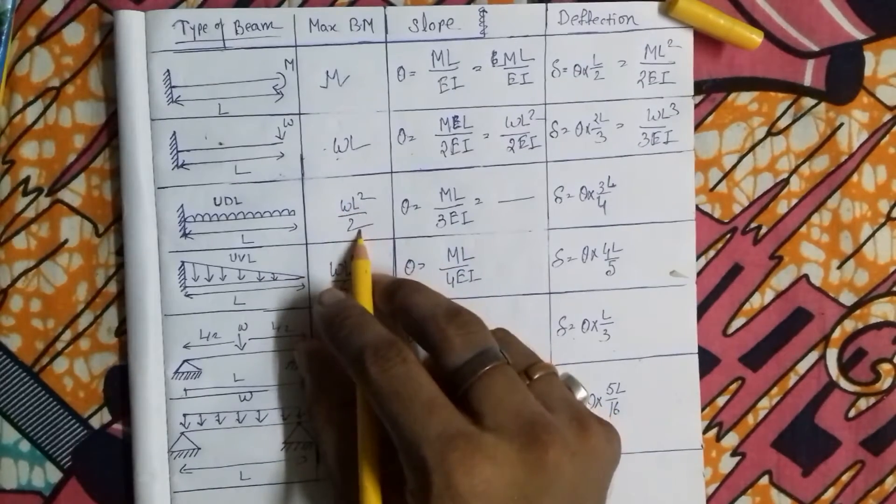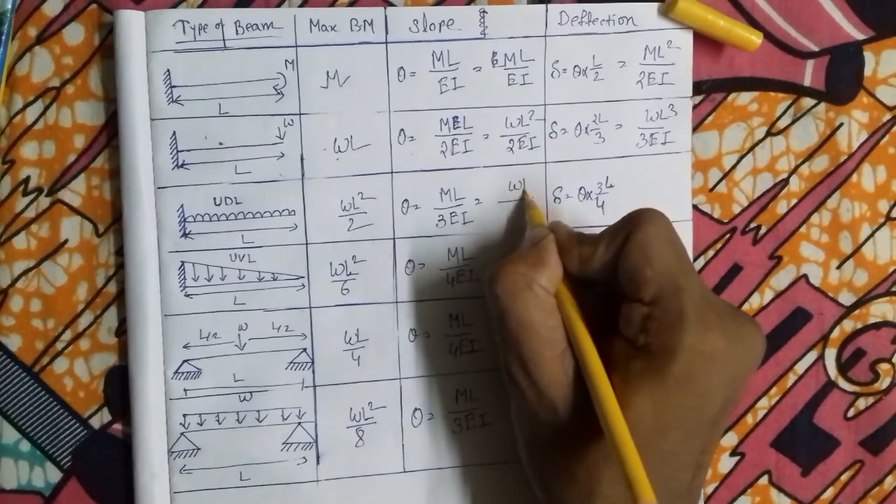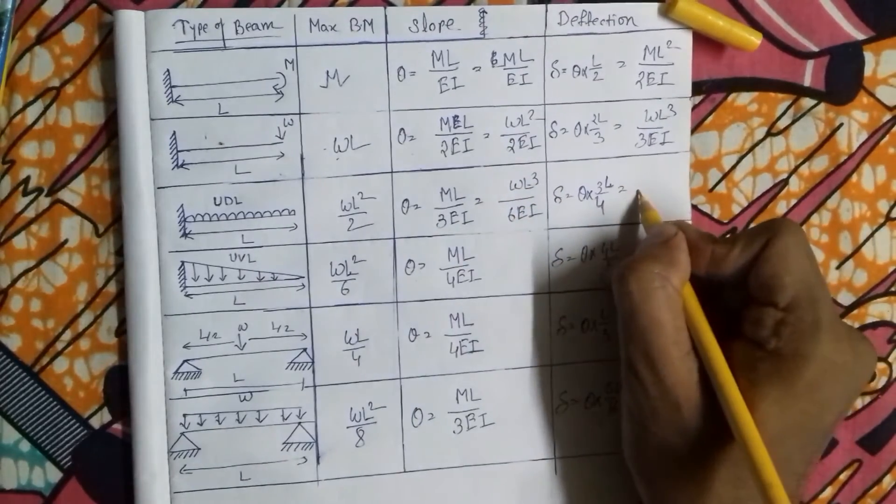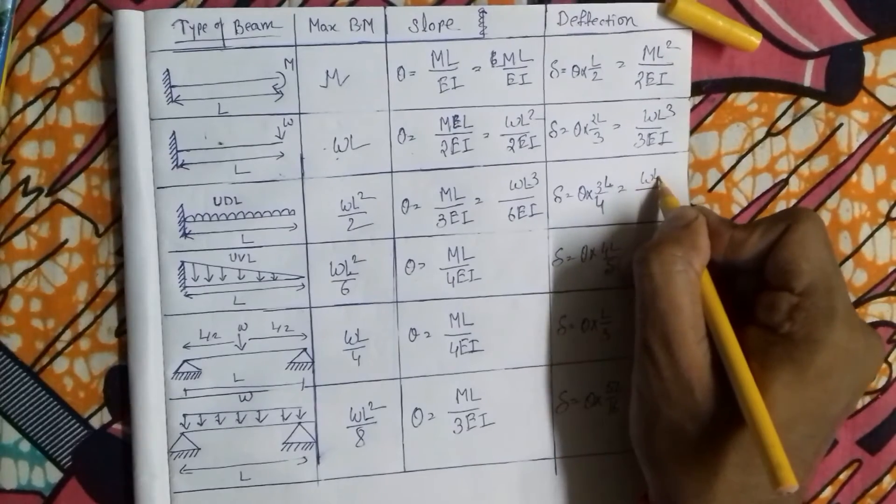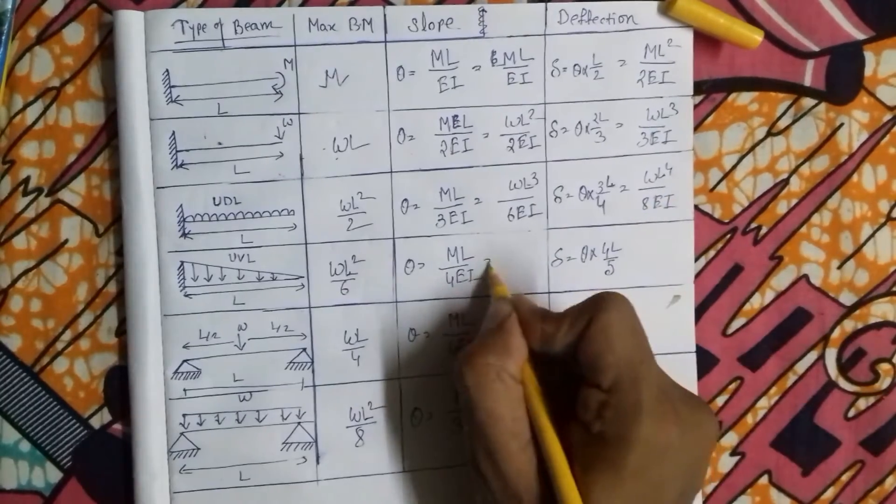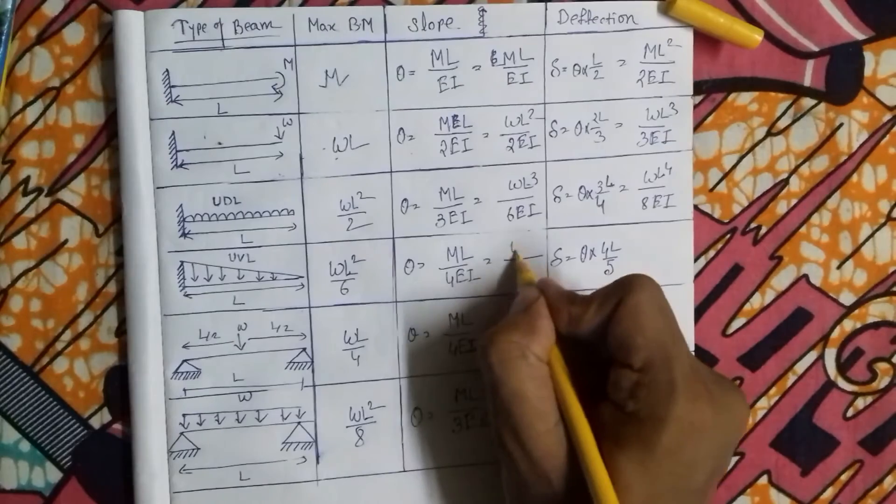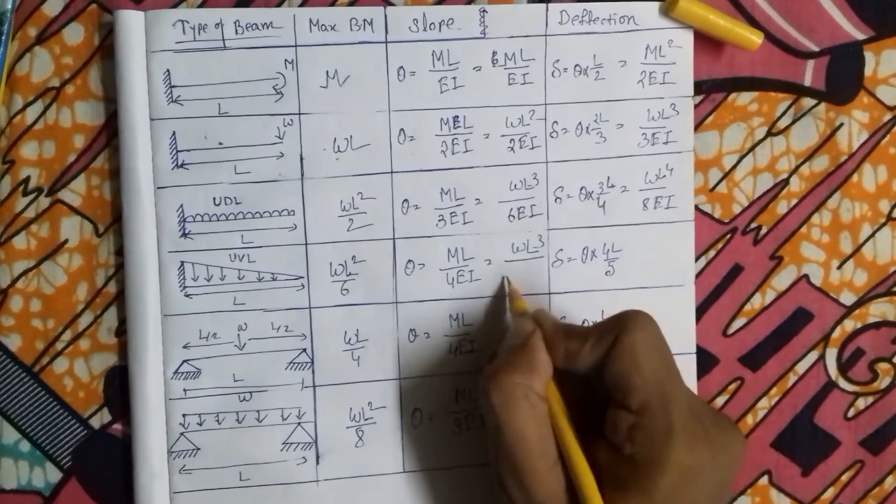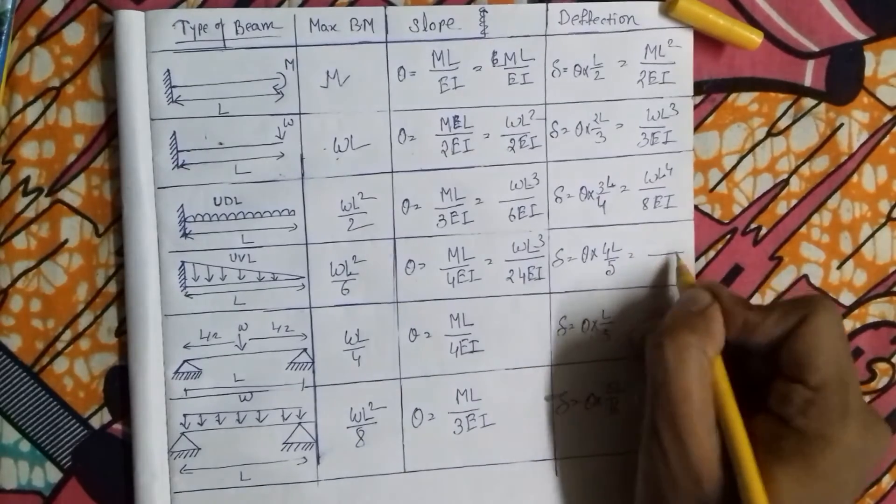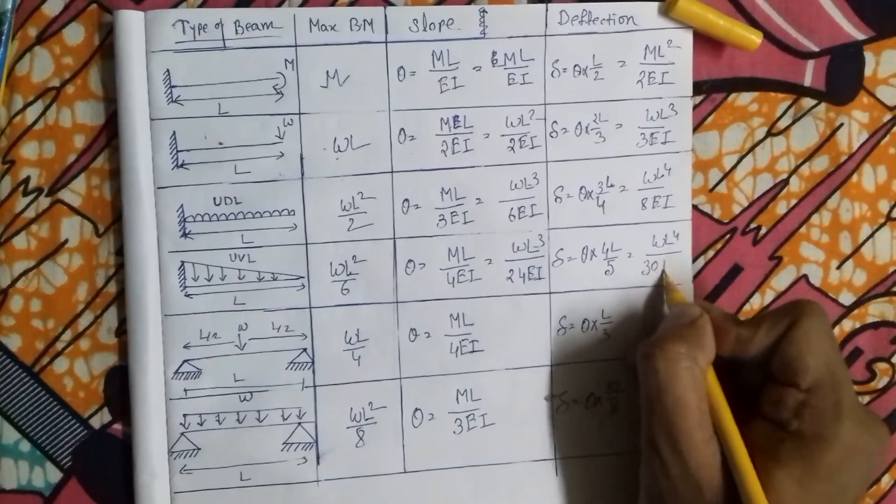Put WL² by 2 substitute of M, so the value will be WL³ by 6EI, and WL to the power 4 by 8EI. W₀L³ by 24EI, WL to the power 4 by 30EI.